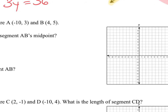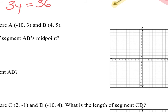Now I'm going to graph these Cartesian coordinates. Segment AB has endpoints at negative 10 comma 3 — that's right there, that's my A — and then 4 comma 5, which is B. That's my B. I'm going to draw that segment.